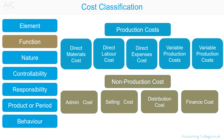Non-production costs include: administration costs, which are the general costs of running the business; selling costs, which are the costs associated with marketing and taking sales orders; distribution costs, which are the costs of distributing finished products; and finance costs, which are the costs incurred in order to finance the organisation.